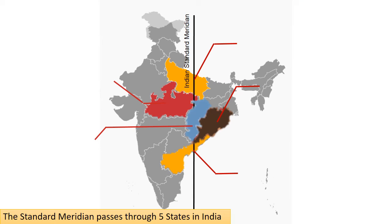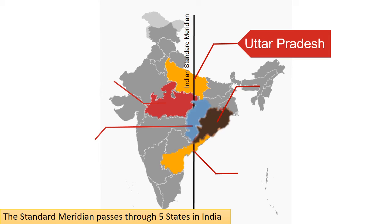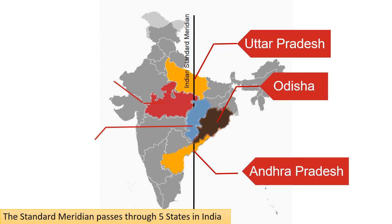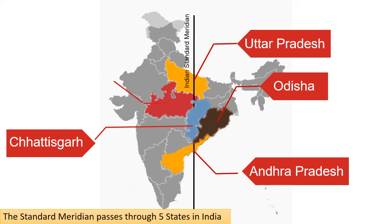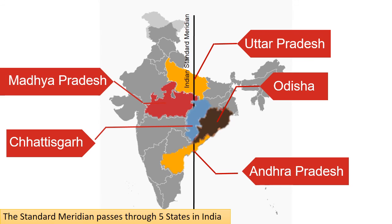Now let's look at the states where the Standard Meridian passes through in India. These are: first, Uttar Pradesh; second, Odisha; third, Andhra Pradesh; fourth, Chhattisgarh; and fifth, Madhya Pradesh. There are five states the Standard Meridian passes through.